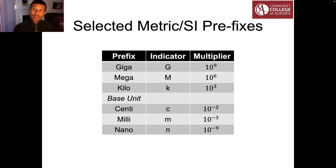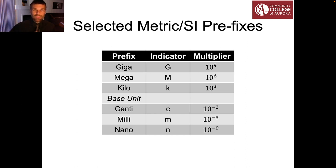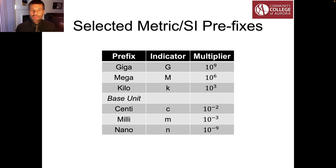Giga and mega, for example, are going to come in when we start talking about deep time. The age of the Earth or the age of the universe might be measured in giga-years, or multiples of 10 to the 9 years — that's 1 billion years, a 1 with 9 zeros after it. A mega-year, on the other hand, is a million years — 10 to the 6 years. Those are going to be really important when we're talking about geologic history and cosmology.